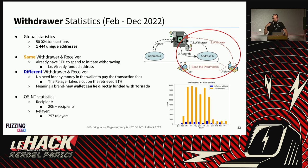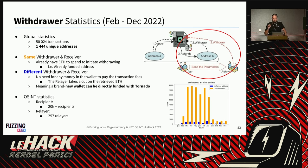When the withdrawer and receiver are different, it usually means a relayer was used. A relayer is someone you give the note to; they withdraw and take a percentage fee. The advantage is that a completely new, empty wallet can receive funds from Tornado Cash via a relayer without needing prior ETH for fees. Looking at the graph, many cases have the same withdrawer and receiver, but some are different — those using relayers were more intentional about creating a fresh wallet.